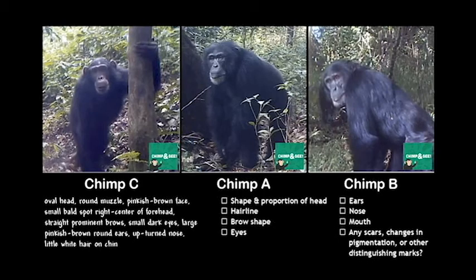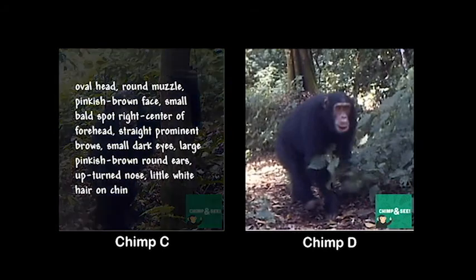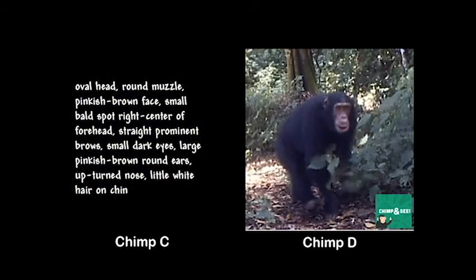Since we're sure that Chimp C doesn't match either Chimp A or Chimp B, what about Chimp D? Now that we have our notes about Chimp C, confirming or ruling out a match with Chimp D will be easy. When comparing one chimp directly to another, you can use the list of traits as your starting point. For example, does Chimp D have an oval head? Yep. A round muzzle? Yep. And so on. If there are mostly matching traits and nothing that rules out a match, chances are pretty good that it's the same chimp. You should then go over the full checklist to make sure you don't miss something, like a scar or other trait that only Chimp D has.